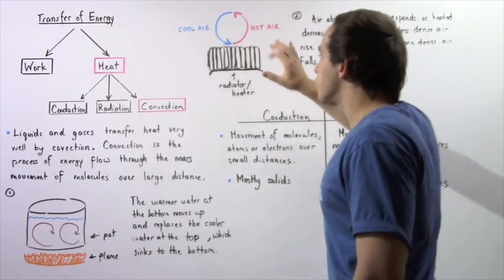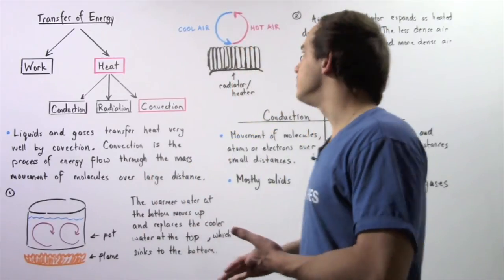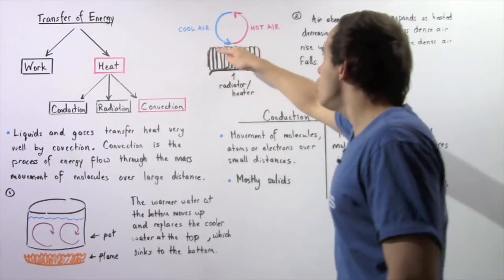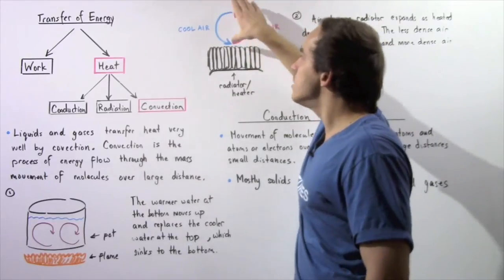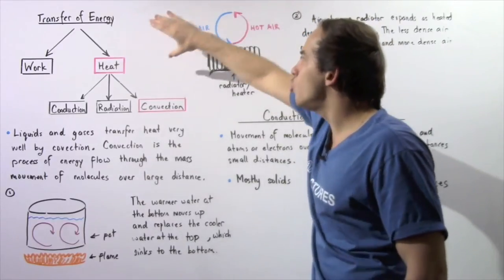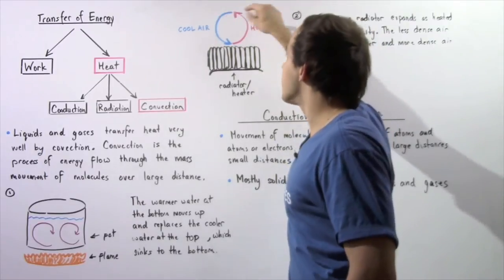The air right above the radiator will expand and become less dense. It will move to the top, replacing the cooler air. The cooler and more dense air will drop to the bottom.